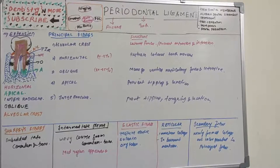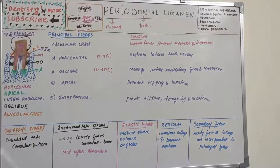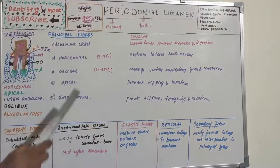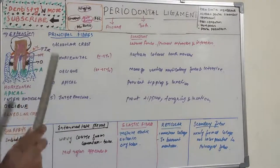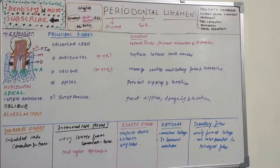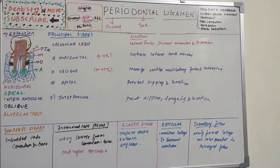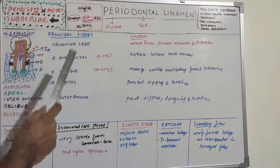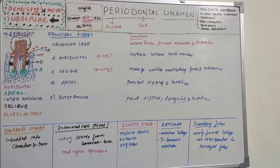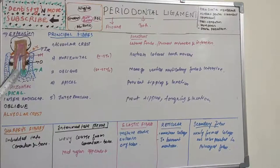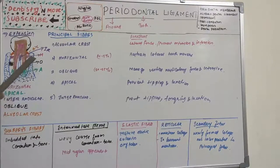There are five groups of principal fibers: alveolar crest group, horizontal group, oblique group, apical group, and interradicular group. This is a very important subtopic in periodontal ligament and might be asked as a short note or long essay. In the diagram, green represents apical, black is oblique, pink is horizontal, violet is interradicular, and orange is alveolar crest.